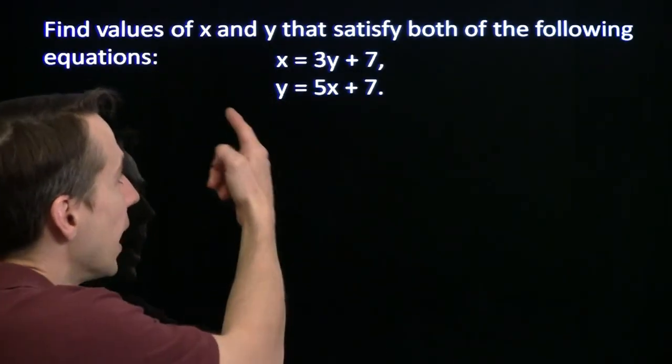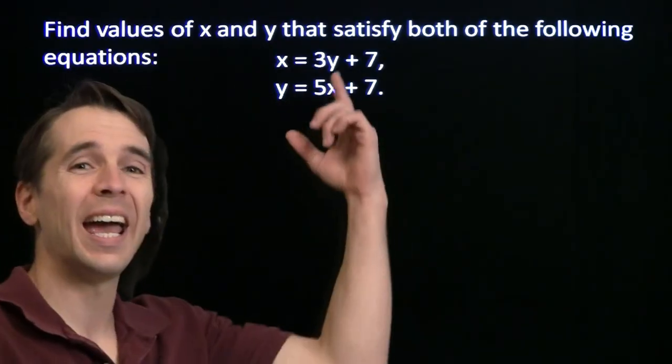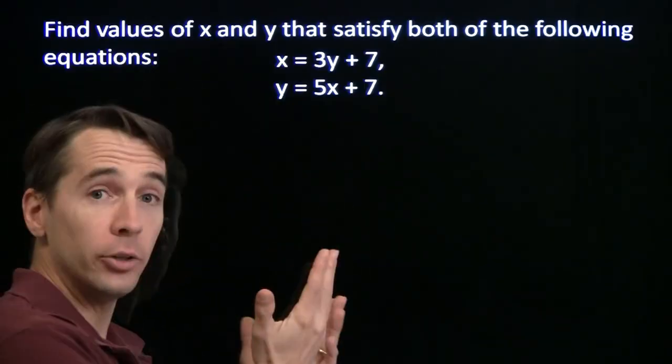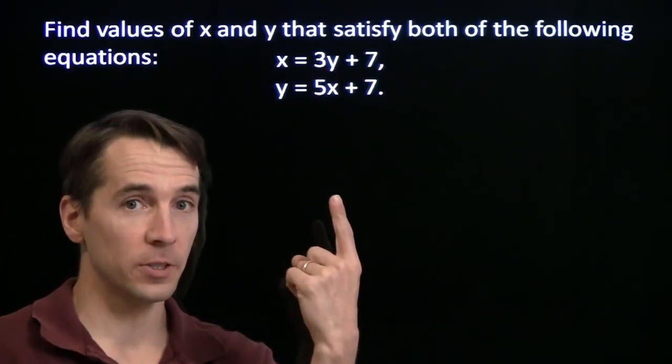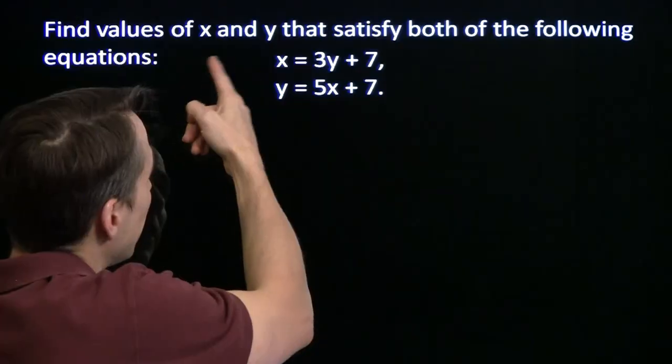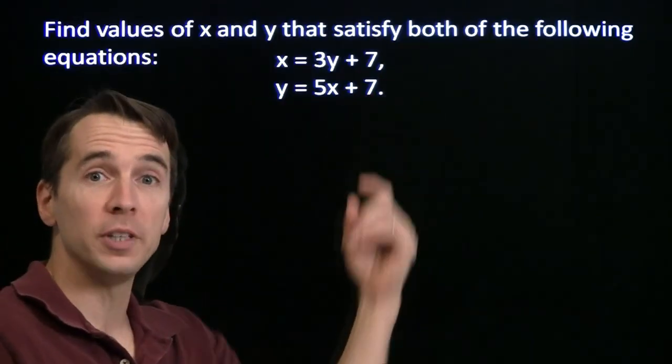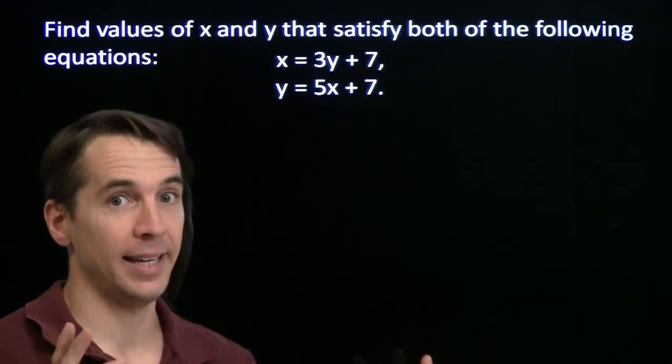We know how to solve one-variable linear equations, so how about two? Two variables or two equations? Both. We got two variables, x and y, and two equations. They're linear equations. That means each of the variables is raised to just the first power. And we want to find values of x and y that satisfy both of these equations at the same time.